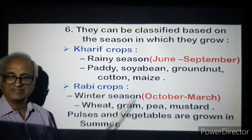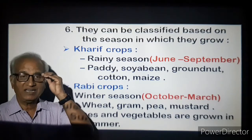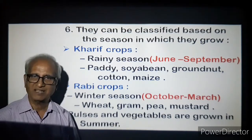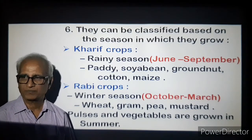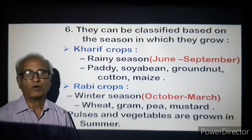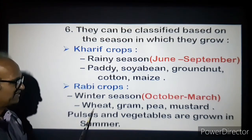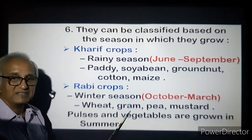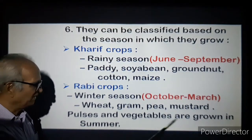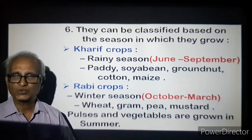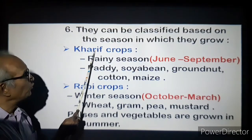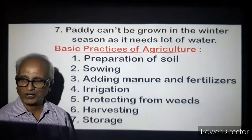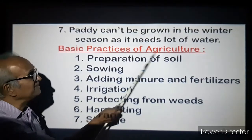Then come Rabi crops, grown in the winter season — say October to March in North India. In South India we may still get rainfall from the retreating monsoon. Wheat is a Rabi crop; wheat doesn't need much water. Grams, pulses, peas, mustard, vegetables — these are all Rabi crops. Rice needs water and can't be grown in the winter season. So we have two crop types: Kharif crops and Rabi crops.